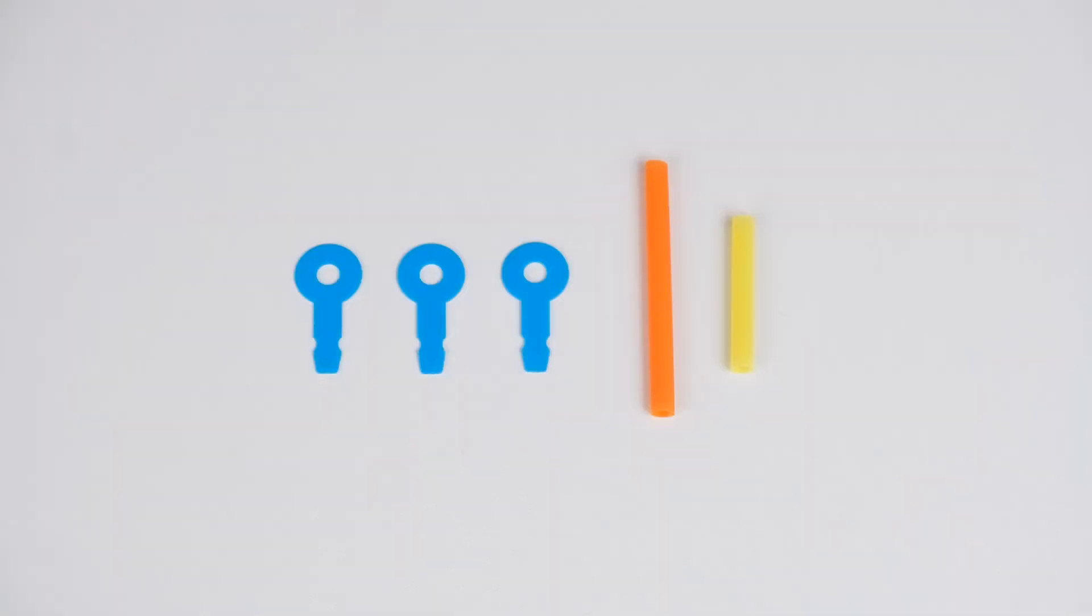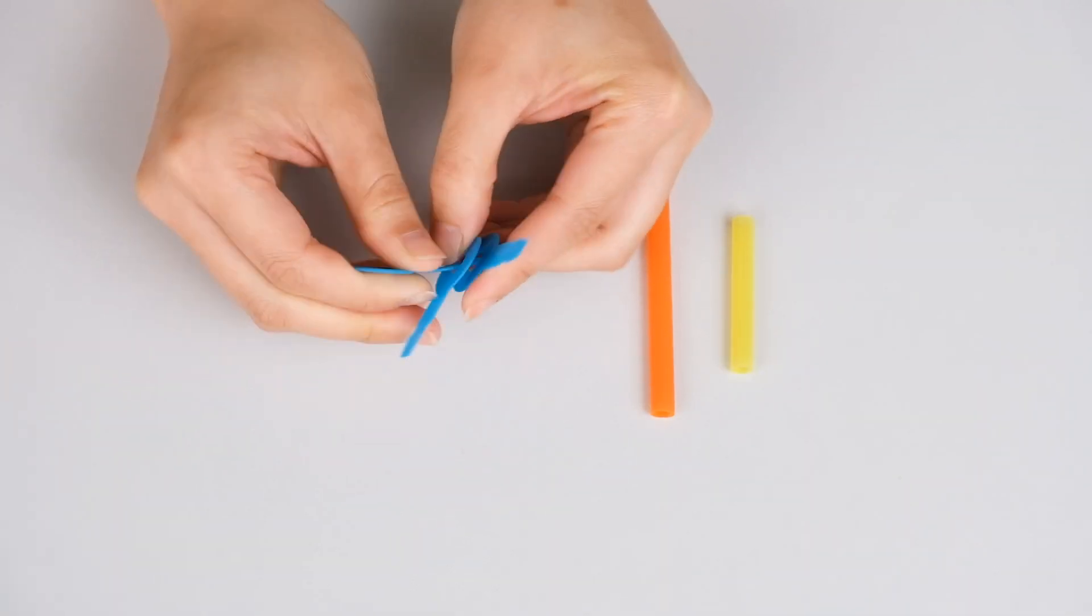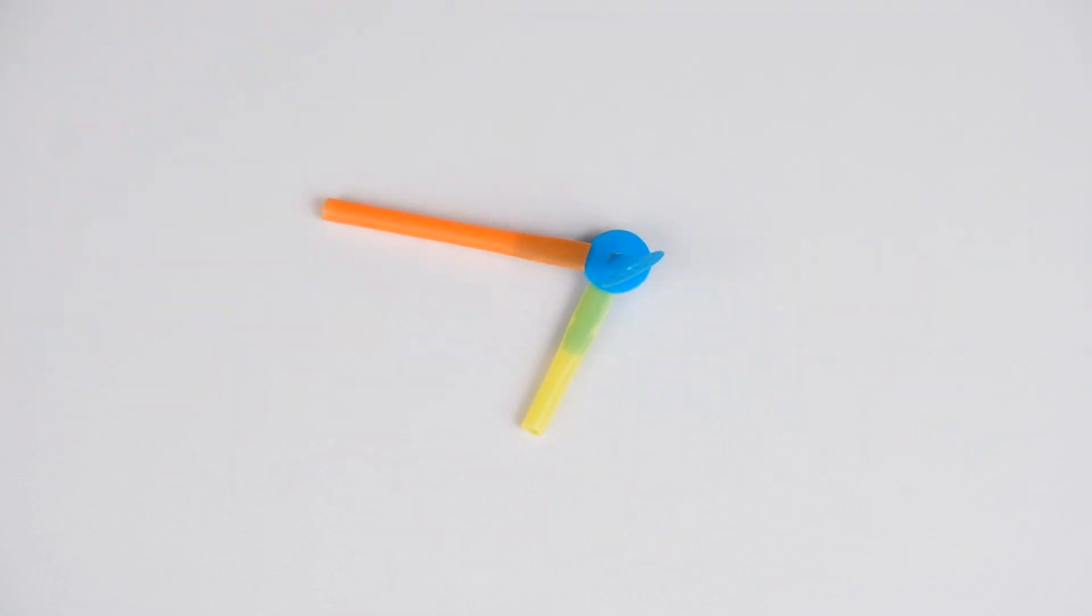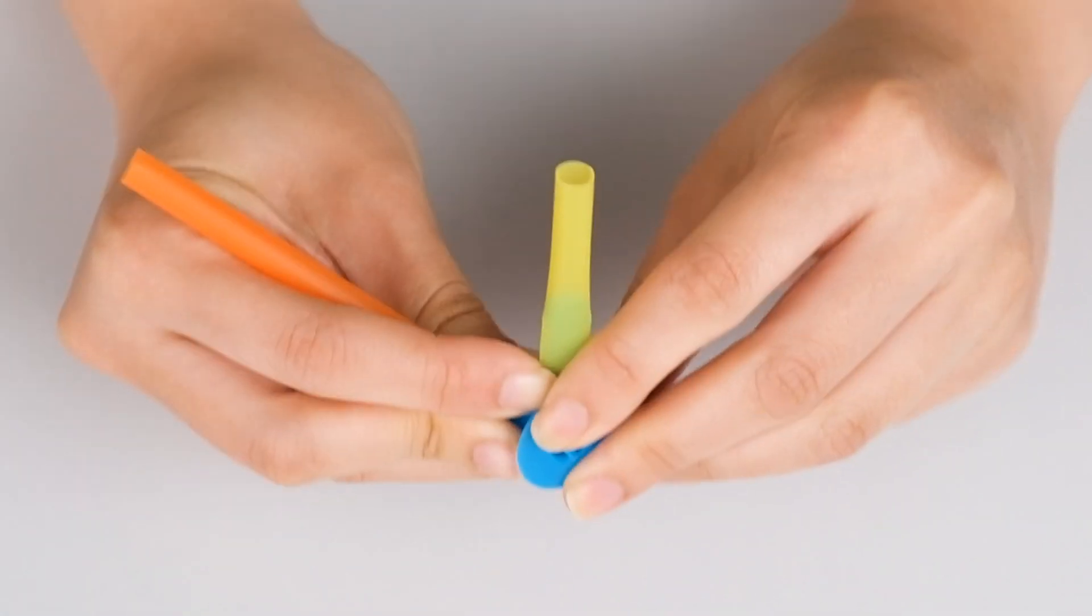With three connectors and two straws, you can make a hinge. You can also make a constrained hinge with more friction.